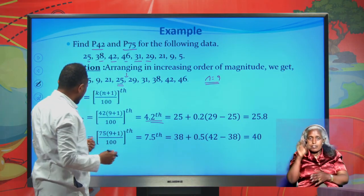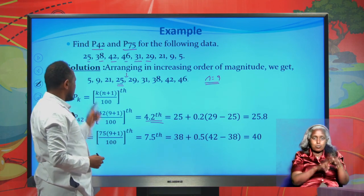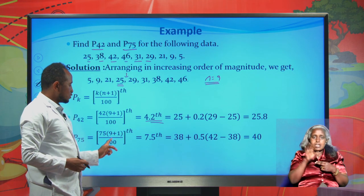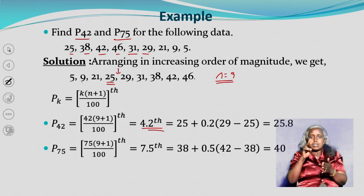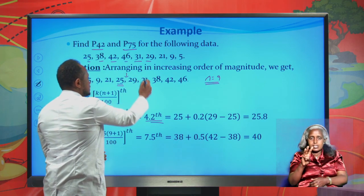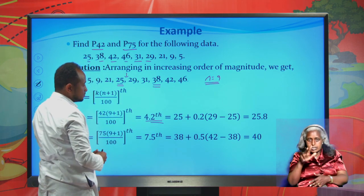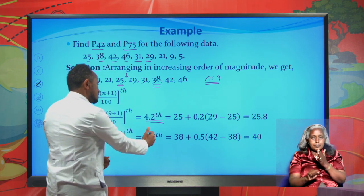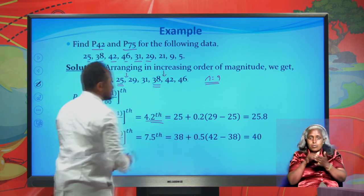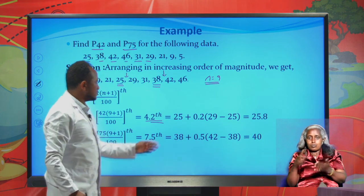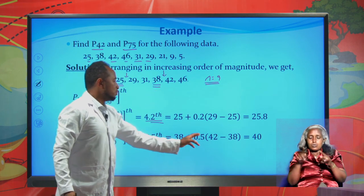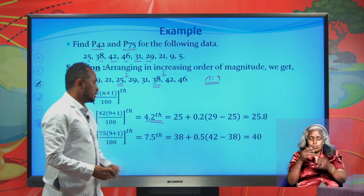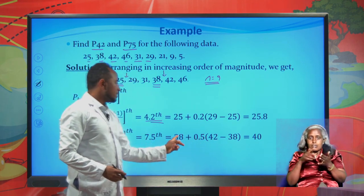For P75, put 75 in place of k: P75 = 75 times (9+1)/100 = 750/100 = 7.5's item. Counting: 1, 2, 3, 4, 5, 6, 7. The seventh item is 38. The 7.5th item is found between 38 and 42. P75 = 38 + 0.5 times (42 minus 38) = 38 + 2 = 40.